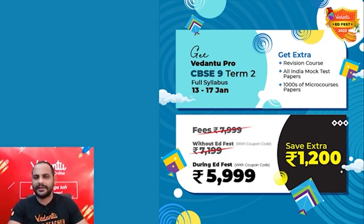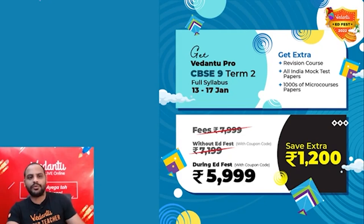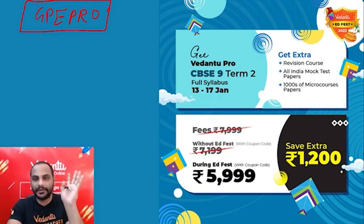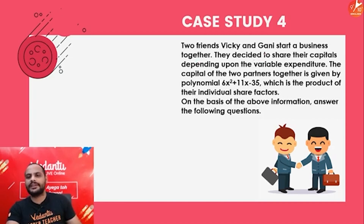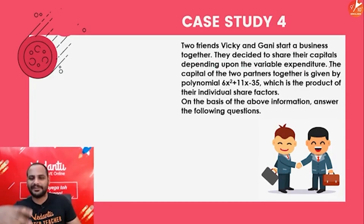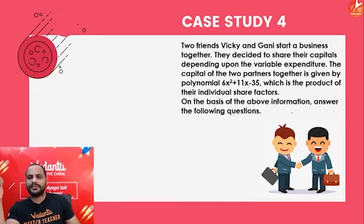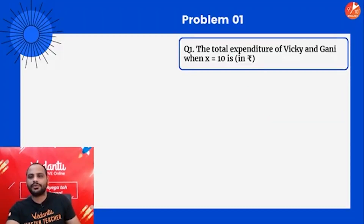Polynomials is a comparatively easy topic and these case-study-based questions are straightforward. If you get a case-study question, understand the equation carefully. Case Study 4: Two friends Vicky and Gunny start a business together. They decide to share their capitals depending upon variable expenditure. The total capital of the two partners is given by the polynomial 6x² + 11x - 35, which is the product of their individual share factors.